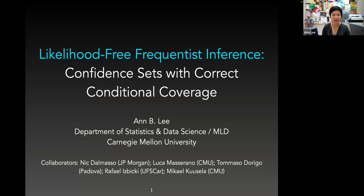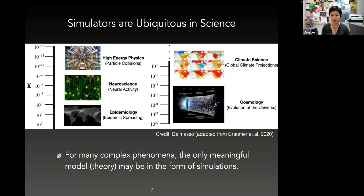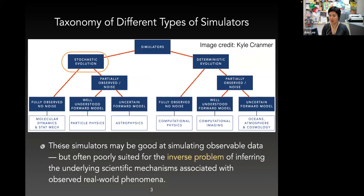Thanks so much. It's a pleasure to be here. We'll talk about our group's work on simulator-based inference and how to construct valid confidence sets. Simulators are used to model complex phenomena at all length scales — from subatomic scales in high energy physics to the scales of the universe in cosmological analysis. In many cases, the only meaningful model of theory might be in the form of simulations. Here's a taxonomy chart of different types of simulators with examples of fields that use simulation for inference. My talk will be about inference using stochastic simulators of the type you might see in particle physics and astrophysics.